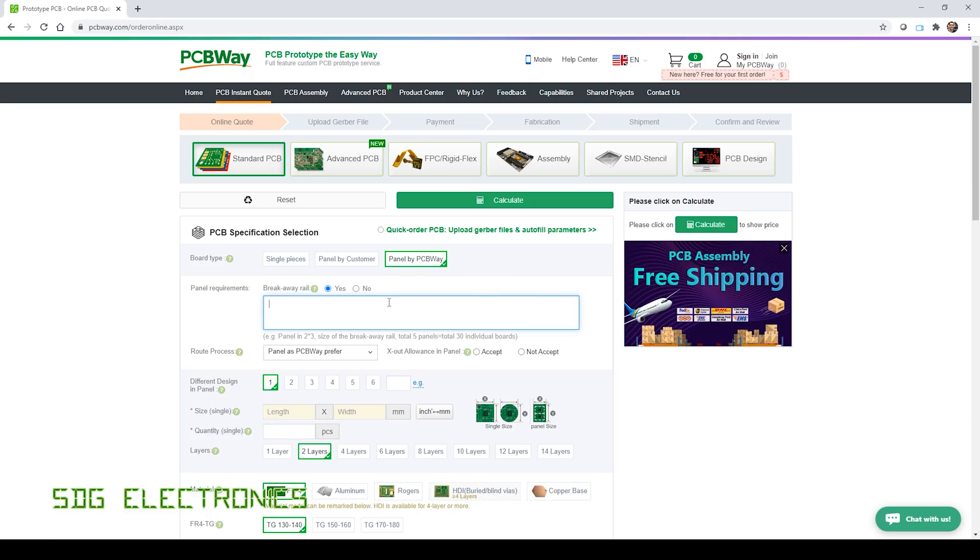I asked for a three by three panel, giving nine PCBs for each panel. And then it gives you the option for how you break away those boards. You can have it however PCBWay prefer, which is normally whichever suits the process they're running on that particular board.